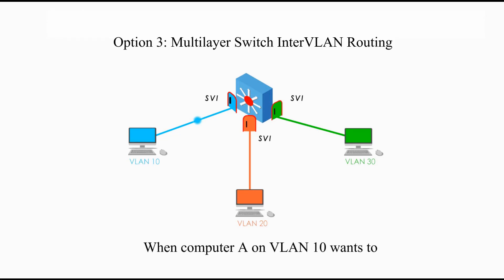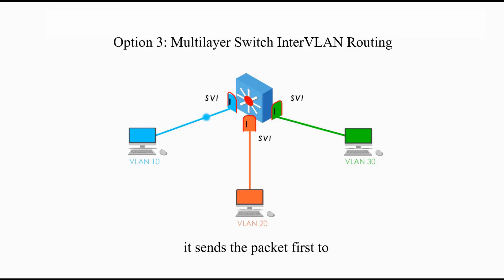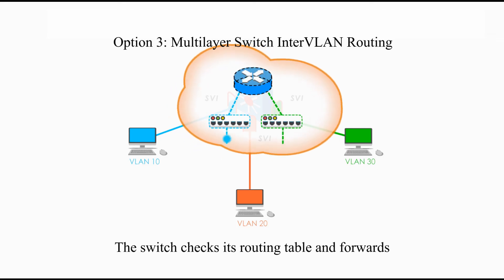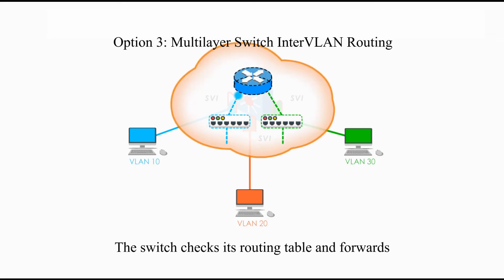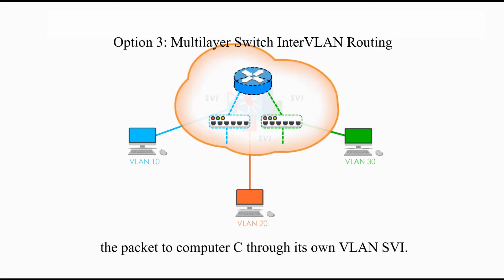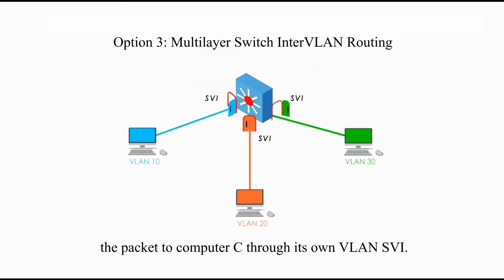When computer A on VLAN 10 wants to talk to computer C on VLAN 30, it sends the packet first to the multi-layer switch through its SVI. The switch checks its routing table and forwards the packet to computer C through its own VLAN SVI.